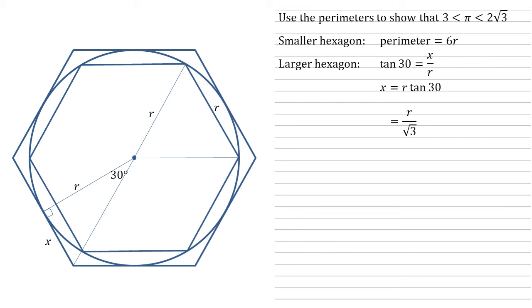As X is half of one side of the hexagon, there must be 12 of them to make the full hexagon. So the perimeter is going to equal 12R over root 3, which simplifies to 4 root 3 times R.